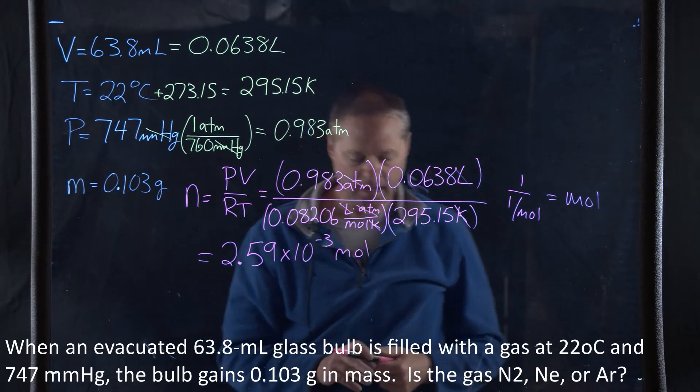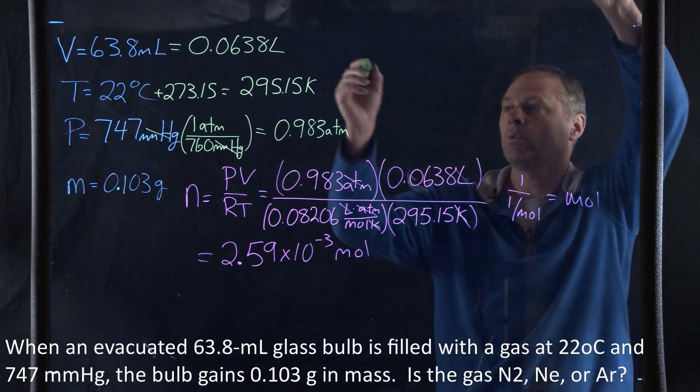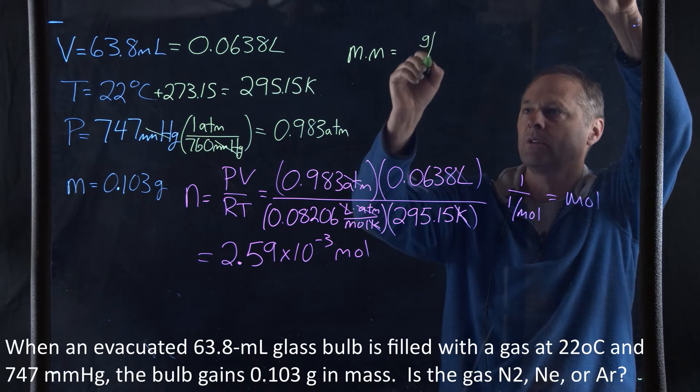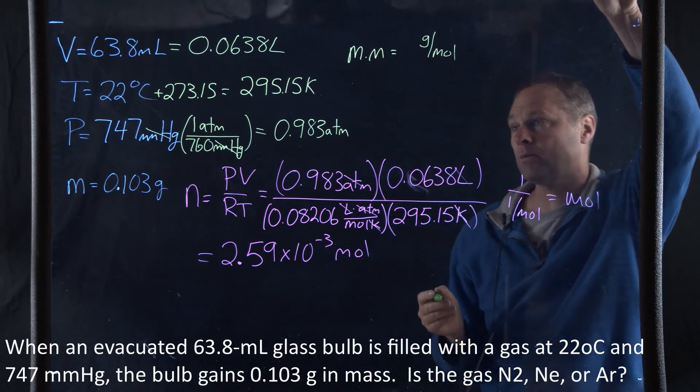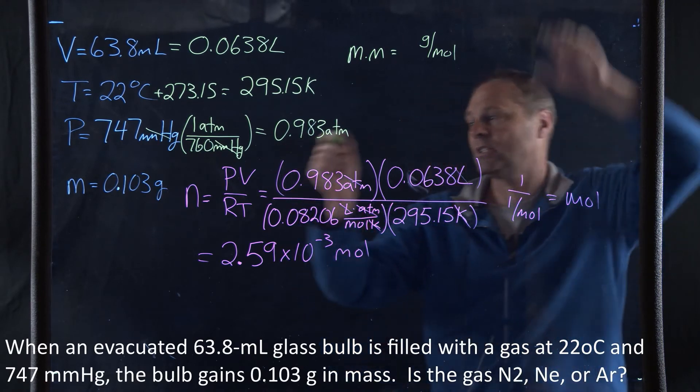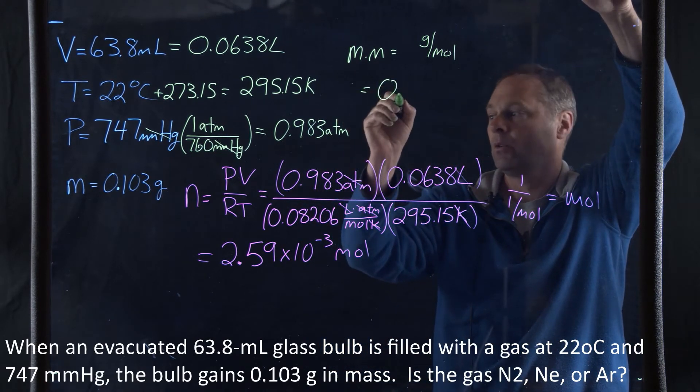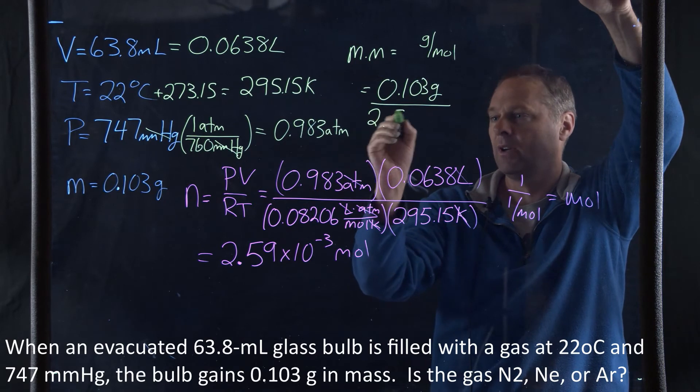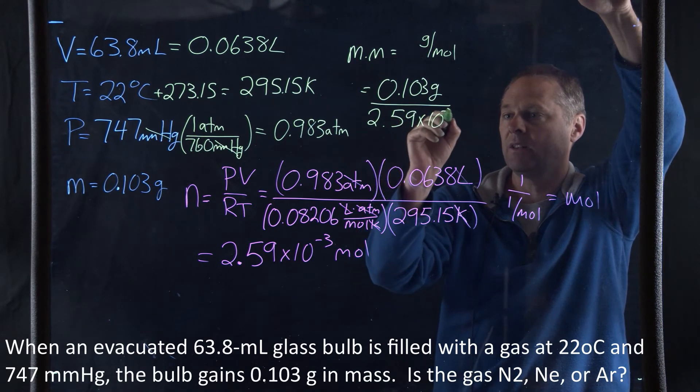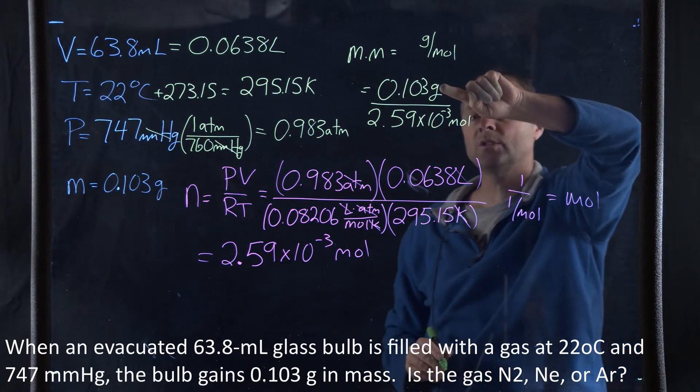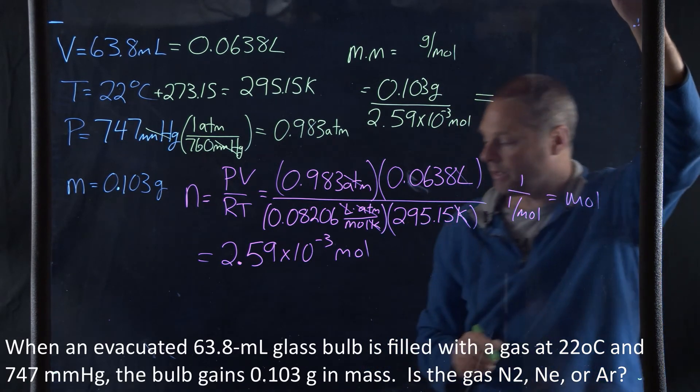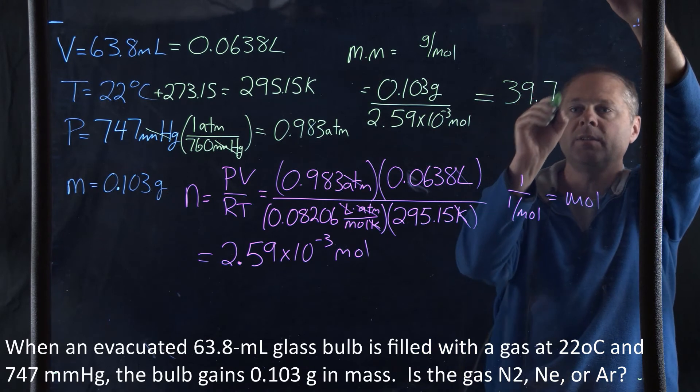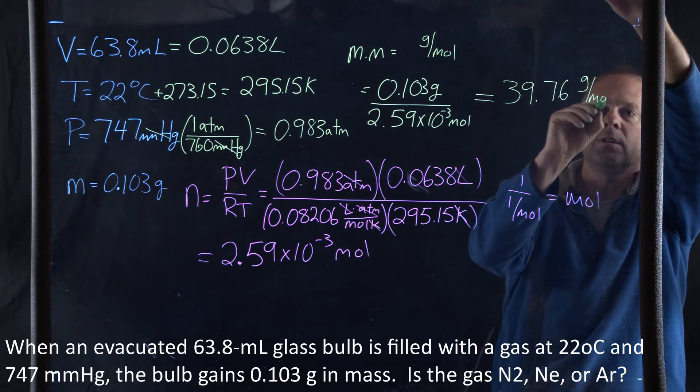Now, if we want to calculate the molar weight, remember, molar mass is equal to grams per mole. So if we take the grams of our sample, 0.103 grams, and we divide it by our moles, which is 2.59 times 10 to the minus third of a mole, we get units of grams per mole. And when we do that arithmetic, what we end up getting is 39.76 grams per mole.